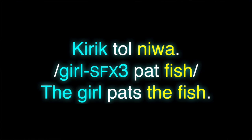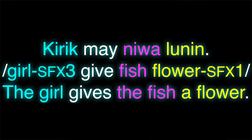Next we have our secondary object strategy — the one that is a little out there compared to what we're used to. Our control sentence is 'Kirik tol niwa,' with still ergative marking on the agent. And then our ditransitive sentence is 'Kirik mai niwa lunin.' What happened here is that niwa didn't change its marking — it's still getting absolutive — but it changed its role. It's no longer the patient, it's now the recipient. It's still unmarked because it's considered to be the most important object in the ditransitive clause. Instead, the patient gets some marking, some different case — in this case we used our N — letting us know that it is the secondary object in a ditransitive clause. The agent still has ergative marking. So that is our 12th strategy.